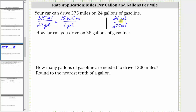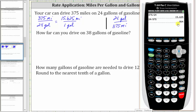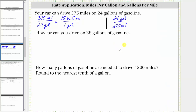Now let's determine the unit rate for the second rate by dividing 24 by 375, which gives us 0.064. Again, to make this a fraction with a denominator of one, the unit rate is 0.064 gallons per one mile.